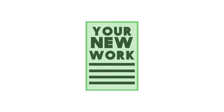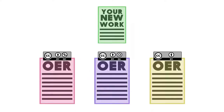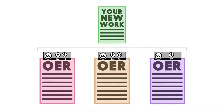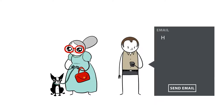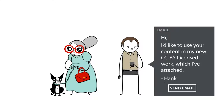Suppose you are developing a work and you want to use some other CC licensed works within yours. If you adapt or derive works offered under Creative Commons licenses, you must not only follow the terms of the licenses involved, but also choose a license for your work that is compatible with the licenses of the works you are using. If a license of a work you want to use is not compatible, search for a comparable work with a compatible license, or try to contact the rights holder and request permission to use the work under your license.